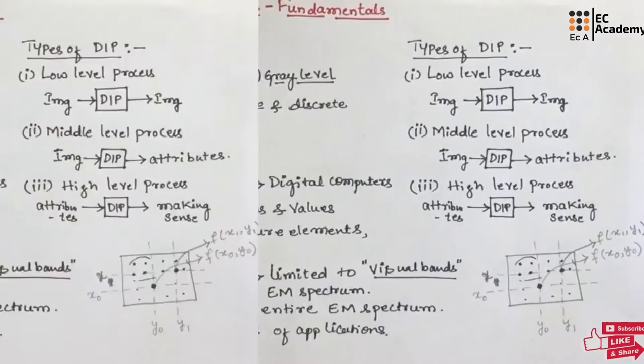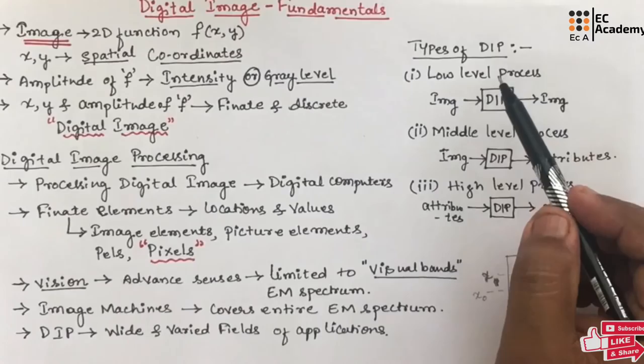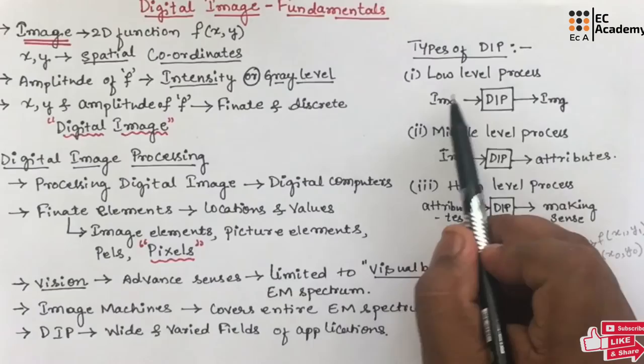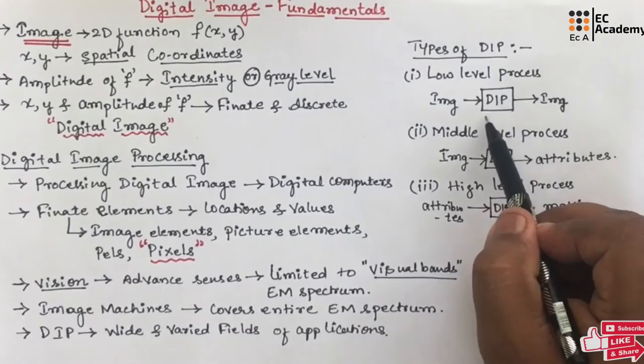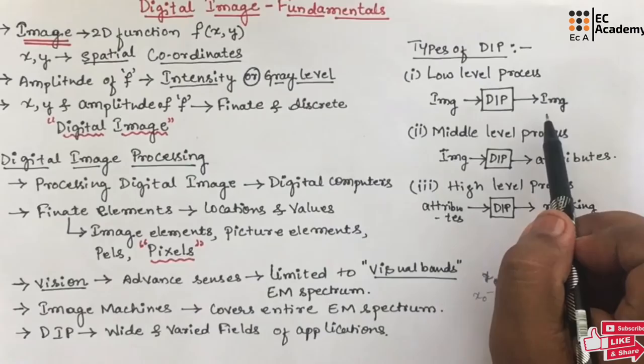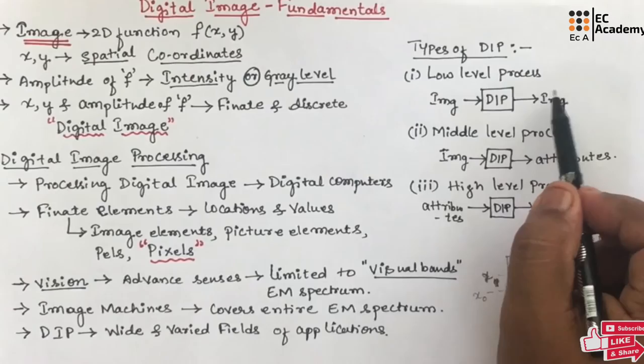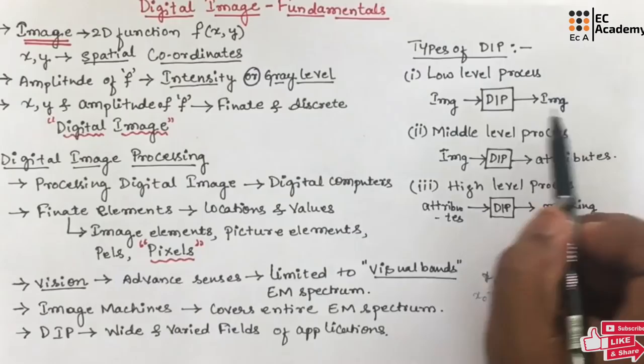Digital image processing consists of three important levels: low level processing, middle level processing, and high level processing. In low level processing, input as well as output are images. For example, we can take noise reduction in an image — we give a noisy image and after digital image processing, we get a cleared image with noise reduced. So the input is an image and the output is also an image.